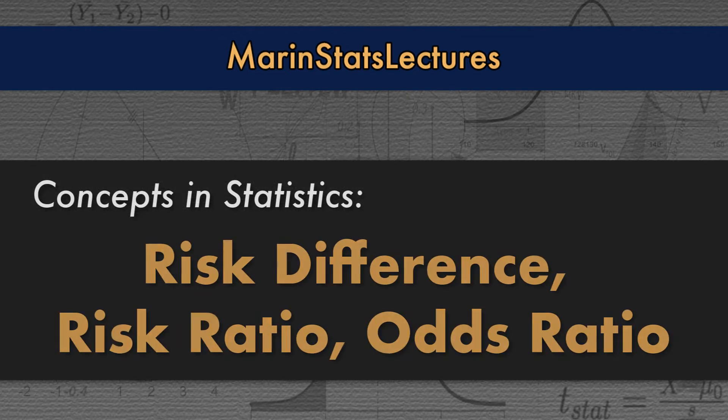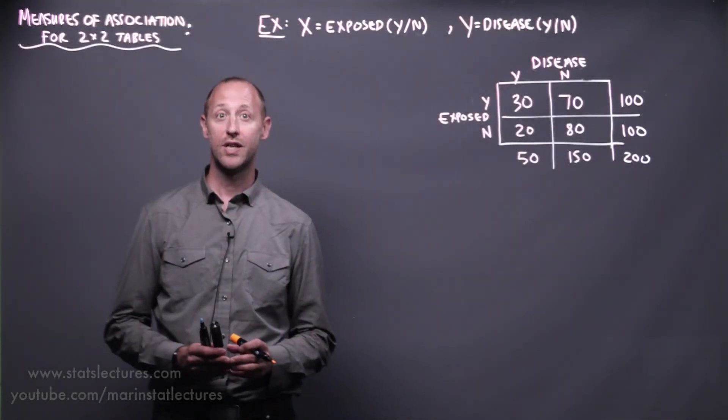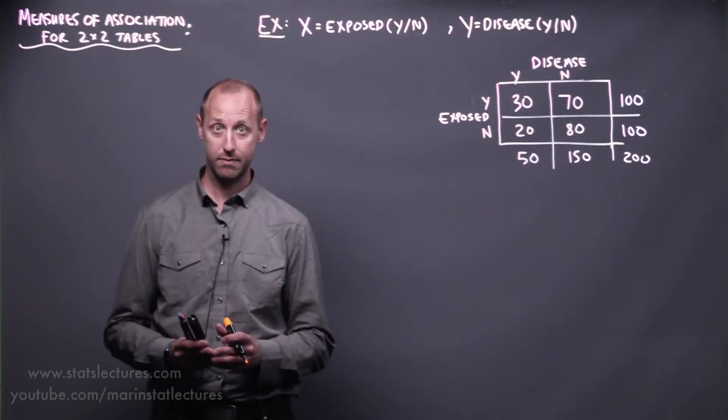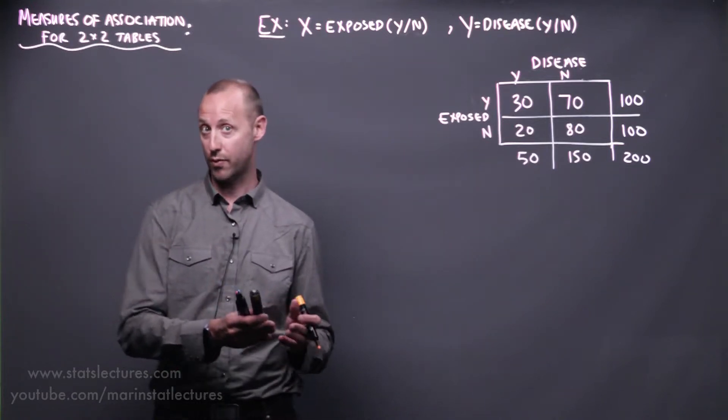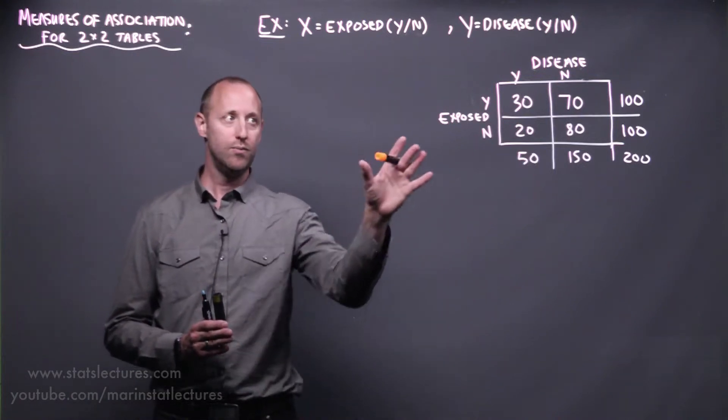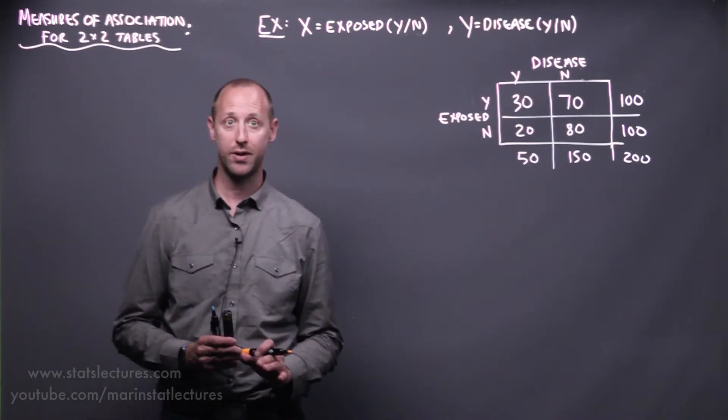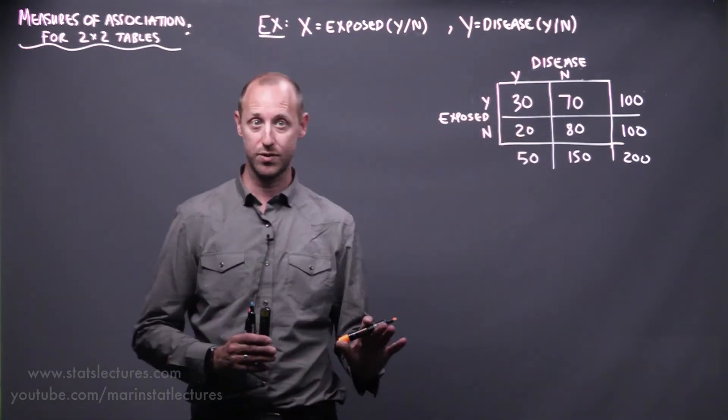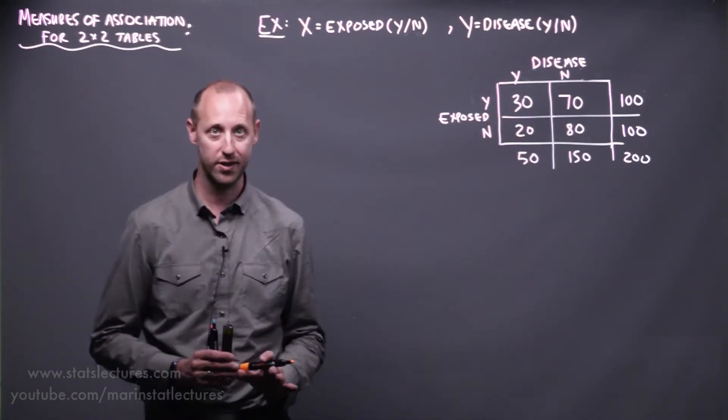We're going to talk about a big-picture overview of measures of association for two-by-two tables. We're going to introduce the idea of the risk difference or attributable risk, the risk ratio or rate ratio, as well as the odds ratio. To do so, we're going to work our way through this simple example here. I've kept the example fairly simple numerically so we can focus on the concepts, not the calculations.